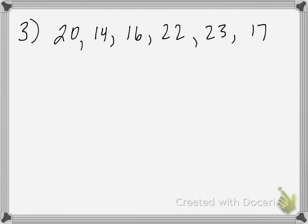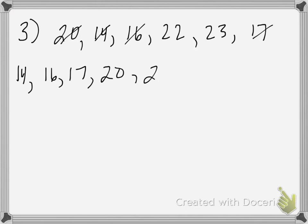Let's try one more. Here's the data set: 20, 14, 16, 22, 23, and 17. As with the others, the first step is to rewrite in order: 14, 16, 17, 20, 22, and lastly 23.